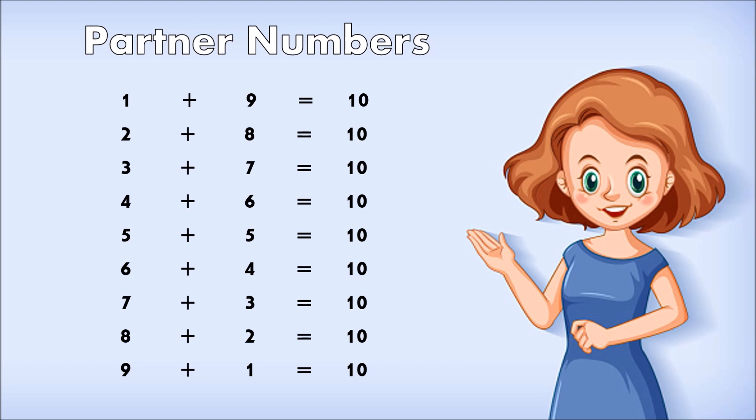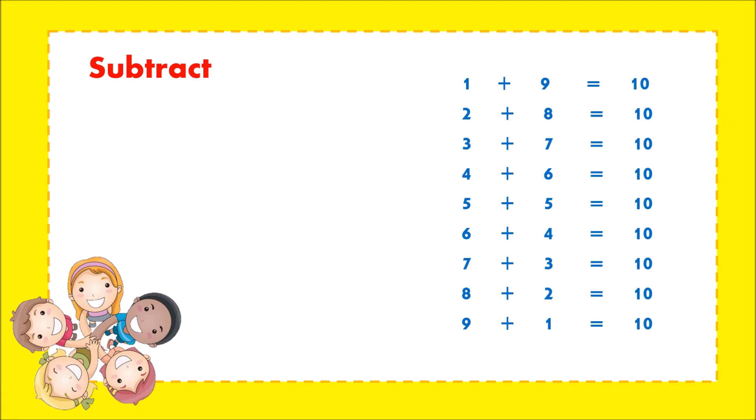Now let's try to use these partner numbers in answering the following problems. 53 minus 18. First, let's subtract those numbers in the ones place. Since 3 minus 8 is not possible, we will use partner numbers for this. The partner of 8 is 2. Add 2 to 3 and the answer is 5. Note that once you use partner numbers, it means that you borrow 1 from the number to its left.